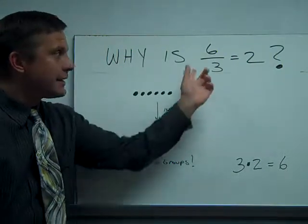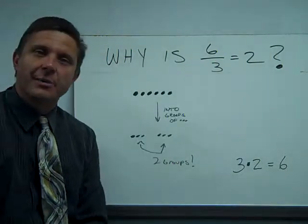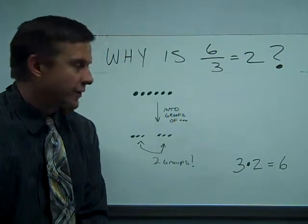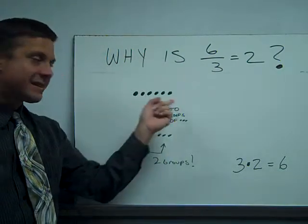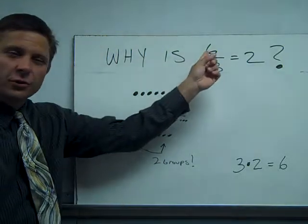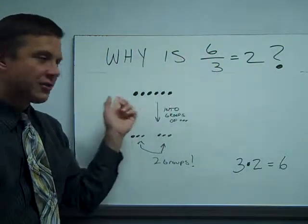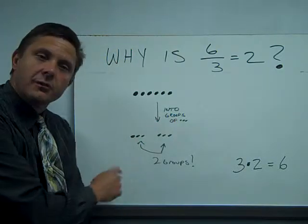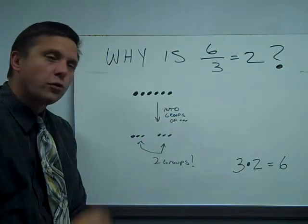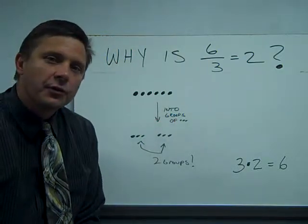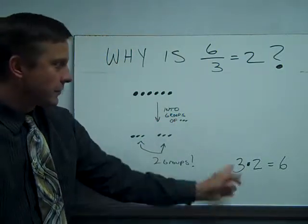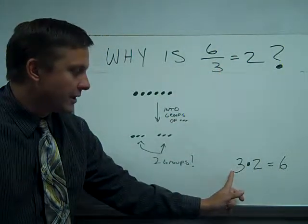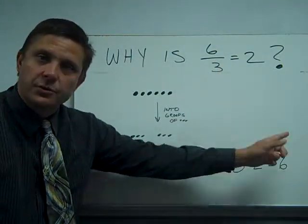We're going to start by saying why is six divided by three equal to two? There are two distinct ways to look at this. One is we know we're breaking six things — the numeral six is just a representation of six — and we want to break this into groups of three. And if we do that we have two groups. We can also think of division as the opposite of multiplication, the inverse. And we know that three times two is six.